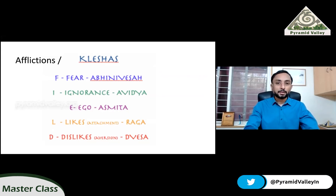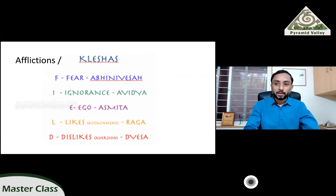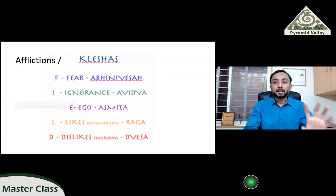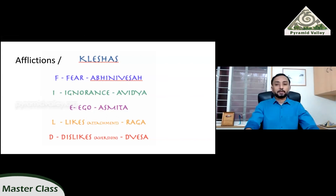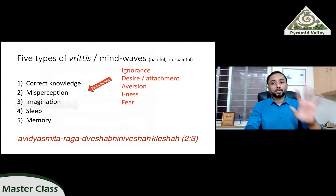These afflictions are also called kleshas in the Yoga Sutras. Someone had this acronym FIELD: Fear, Ignorance, Ego, Like and dislike — raga and dvesha is between likes and dislikes, asmita is the ego, avidya is ignorance, and abhinivesha is fear. These are the five afflictions that color our thoughts. If you have thoughts without these afflictions they are okay, though they do become impressions in the mind. But these five afflictions are what cause pain and suffering, making the vrittis painful.